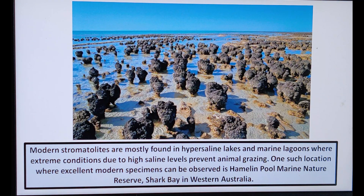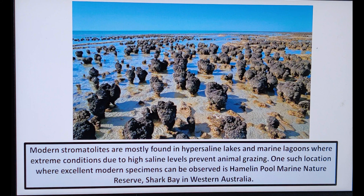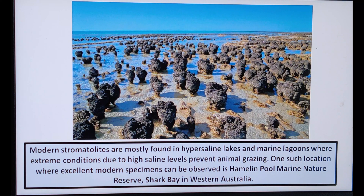Modern stromatolites are mostly found in hypersaline lakes and marine lagoons where extreme conditions due to high saline levels prevent animal grazing, allowing stromatolites to survive there. One such excellent modern specimen is found in Hamlin Pool Marine Nature Reserve, Shark Bay, in Western Australia. And that's all for this presentation, thank you.